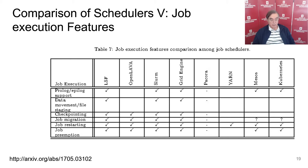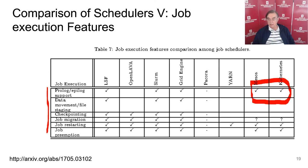The last slide describes how these things map across systems. HPC has the richest set of support. Mesos and Kubernetes probably have at least prolog and epilog, but don't yet have data movement or file staging. You would think they would do job preemption to support elasticity. That's the end of this short survey — I recommend reading the paper if you really want to find out more. Thank you very much.